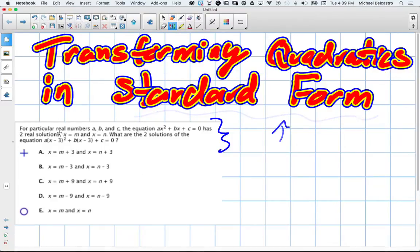For particular real numbers A, B, and C, and real numbers are essentially any decimal, fraction, numbers like that, the equation AX squared plus BX plus C equals 0 has two real solutions, X equals M and X equals N.